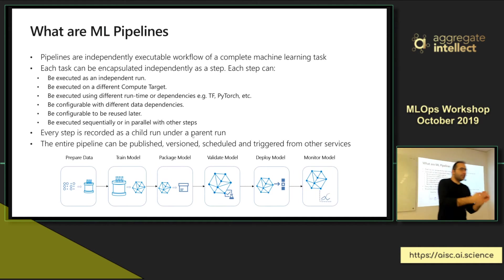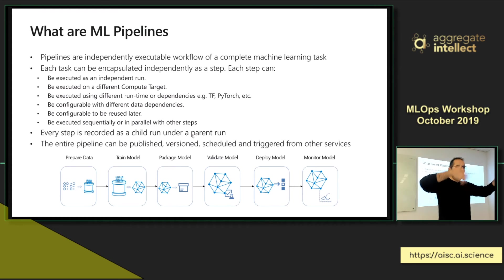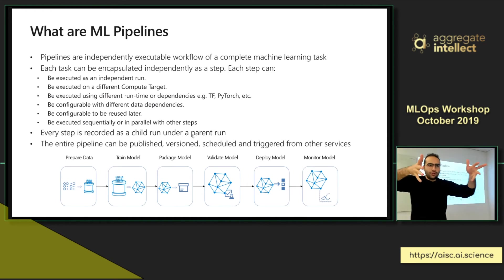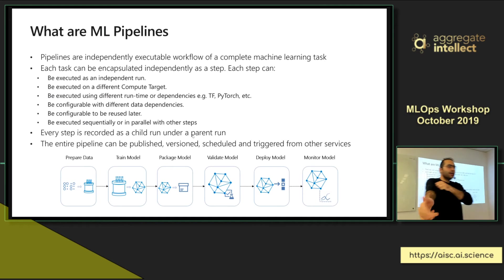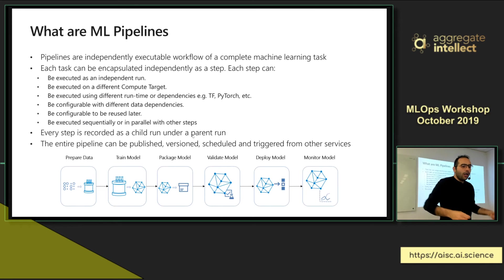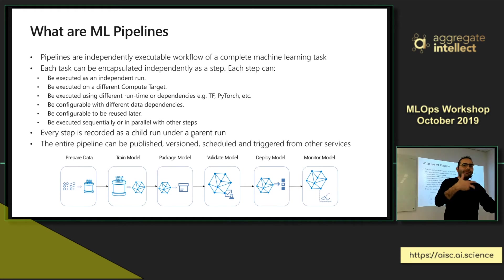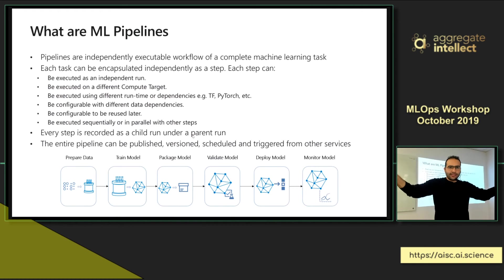For machine learning use cases, you probably want different compute targets at each step because of the difference in tasks — one step may need CPU, another needs GPU, another needs a Spark cluster, and so on. You want to orchestrate that and break it into smaller steps. At the same time, you want to track all experiments as the pipeline runs. Generic pipeline engines don't provide this, so you need a dedicated ML engine to collect all metrics as the pipeline executes.